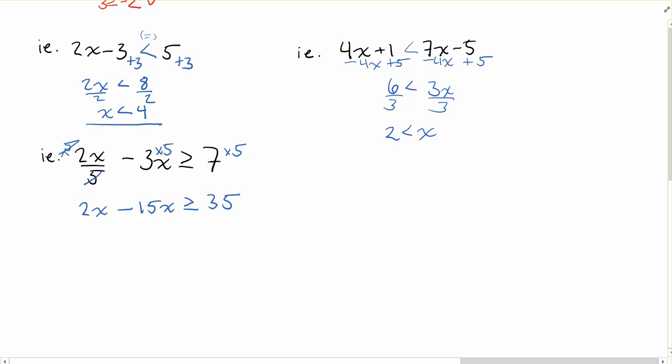Combining like terms here, I've got 2x minus 15x. That gets me to negative 13x is greater than or equal to 35.